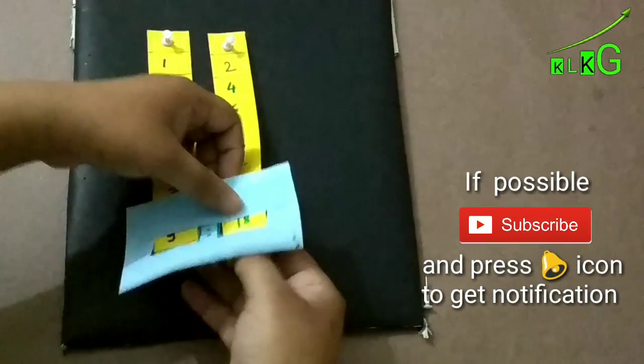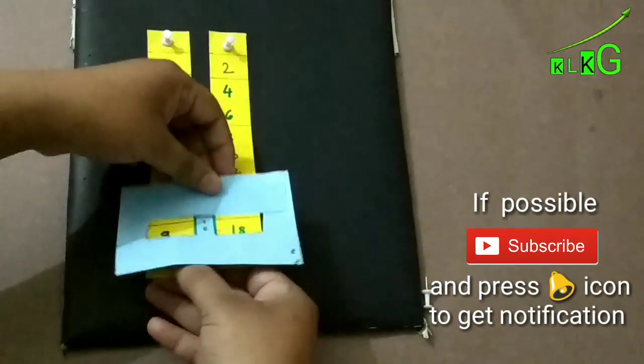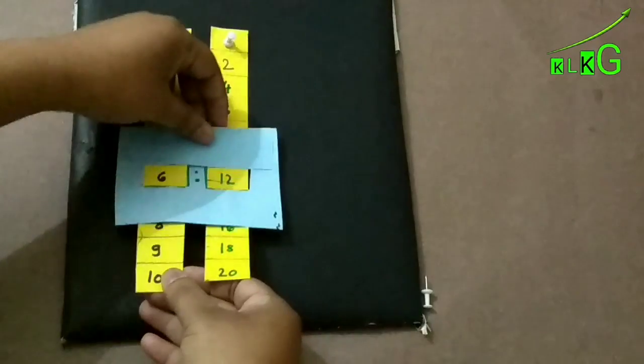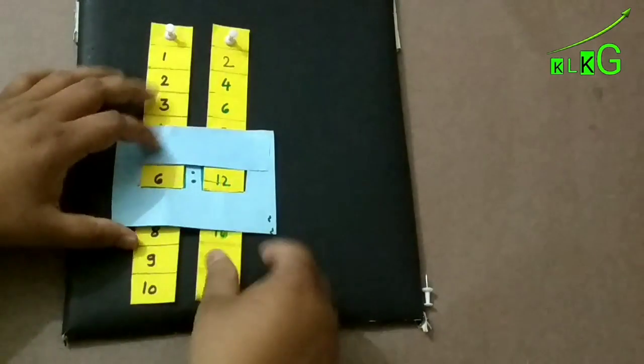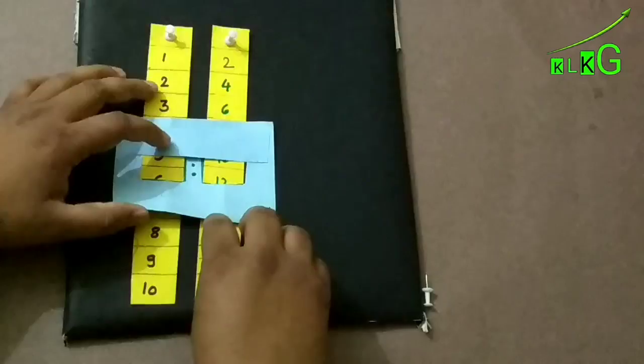Now see, as we keep moving it up, 9 is to 18, 8 is to 16, 7 is to 14, 6 is to 12. Like that, as we keep on moving it, it will show us the different ratios.